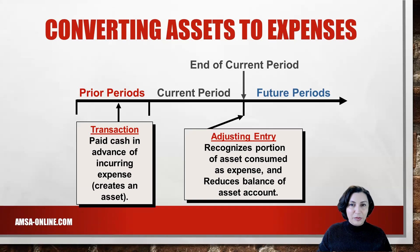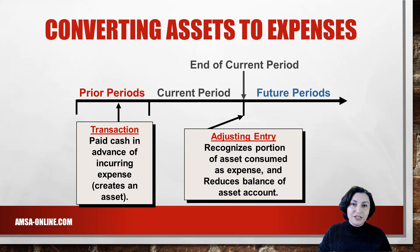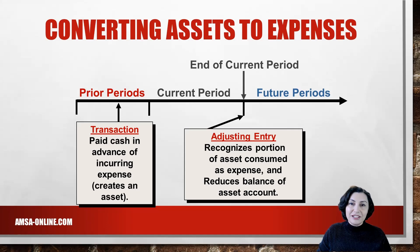Let's look at converting assets to expenses first. When an adjusting entry is used to convert an asset to expense, it means that a transaction took place in a prior period involving the advance payment of an expense. Three common examples are the recognition of depreciation expense on plant assets, the using up of office supplies during the period, and the expiration of prepaid insurance. We need to make an adjusting entry at the end of the current period to recognize the converting of the prepaid asset into an expense. The asset account is reduced or credited, and the expense account is increased or debited.